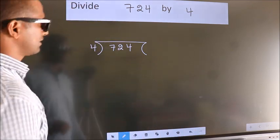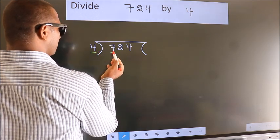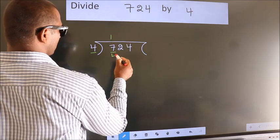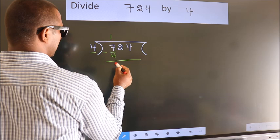Next. Here we have 7, here 4. A number close to 7 in 4 table is 4 once 4. Now we should subtract. We get 3.